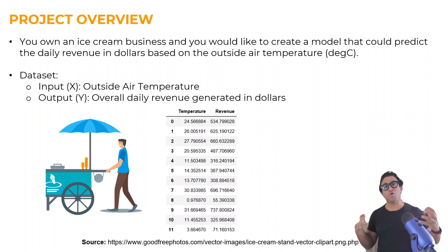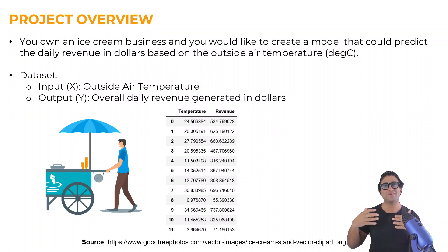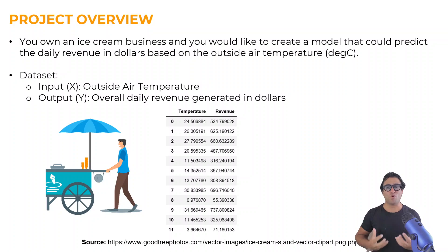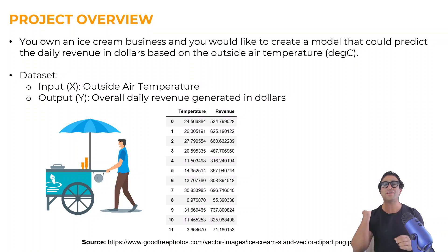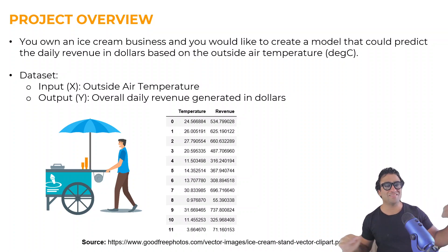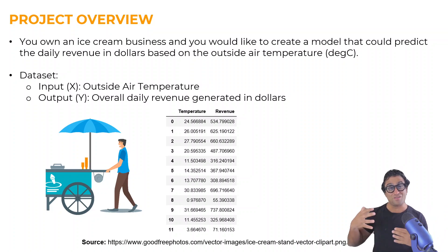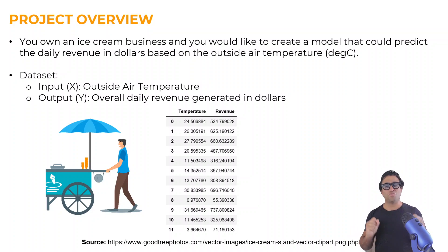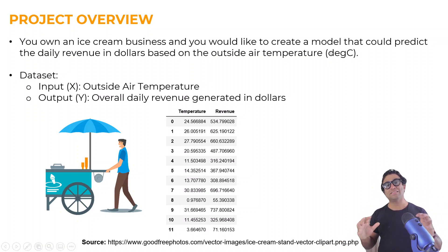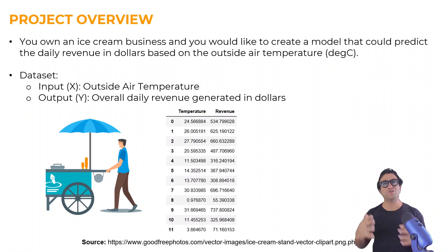In this project we assume that you own an ice cream business and as a business owner you would like to predict what the daily revenues would be in the future. One key variable that impacts your revenue is the outside air temperature. If the temperature is hot outside people tend to grab ice cream, so the sales and revenue tend to increase. We are going to create a model that could predict the daily revenue in dollars based on the outside air temperature.